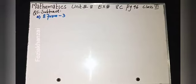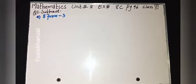Good morning everyone. It's your math class, unit number eight, exercise 8C, page number 96, question number five. We will subtract eight from minus three. After 'from', copy the first number first, then afterwards apply the operation.